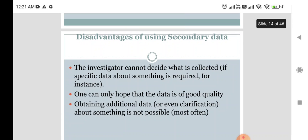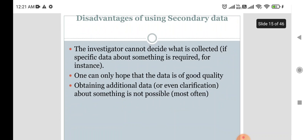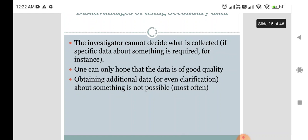Disadvantages of secondary data: the investigator cannot decide what is collected. If specific data is required, the investigator cannot declare how long data collection will take. One can only hope the data is of good quality — there is no fixed assurance. Obtaining additional data about something is not possible with secondary data.